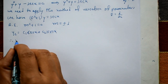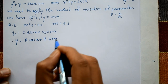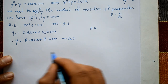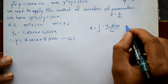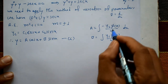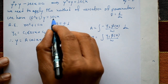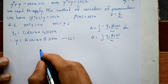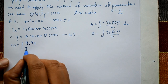The complementary function is c1·cos(x) + c2·sin(x). So y1 = cos(x) and y2 = sin(x). Here φ(x) = sec(x) is the right-hand side. We need the Wronskian W, which is the determinant of [y1, y2; y1', y2']. We have a = -∫(y2·φ(x)/W)dx and b = ∫(y1·φ(x)/W)dx.